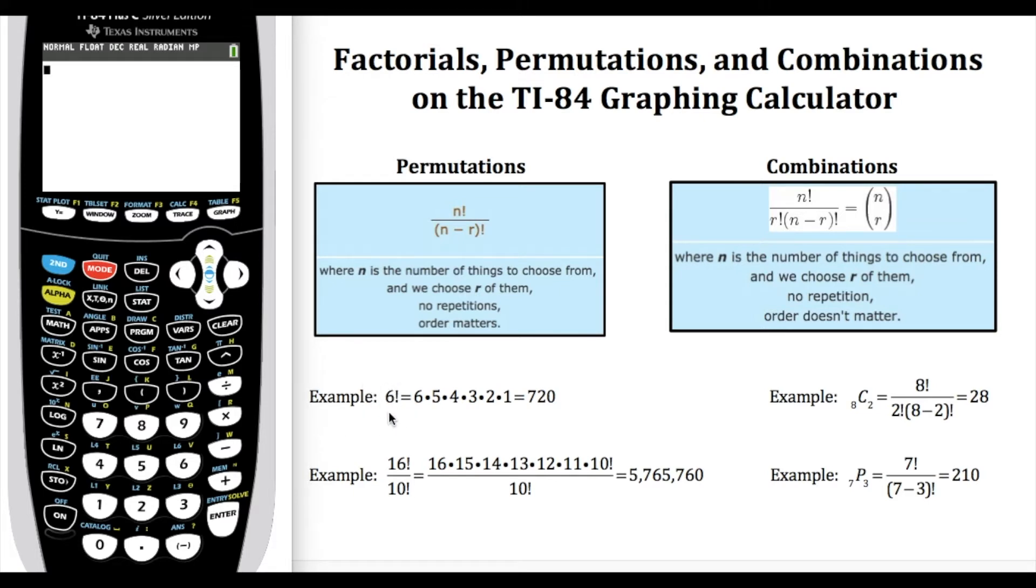In this first example I'm going to be working out six factorial. If we were doing this by hand we would do the expansion 6 × 5 × 4 × 3 × 2 × 1, that would give us a total of 720. With a small number like six that's not too hard to do longhand, but on the calculator we can do it a lot quicker.